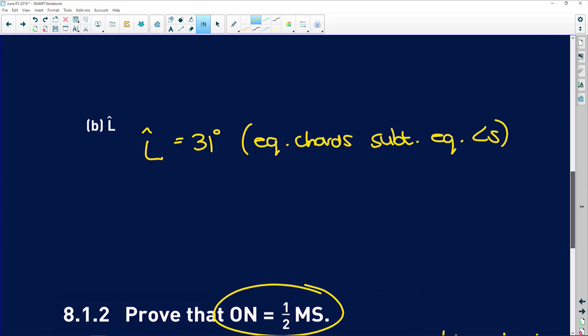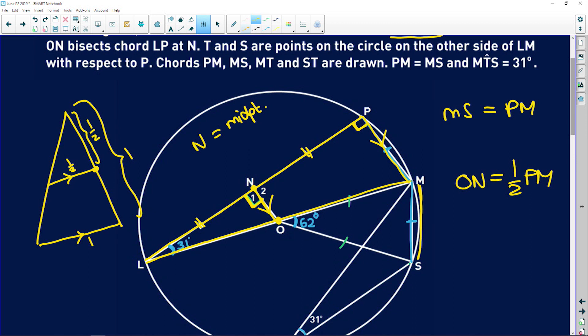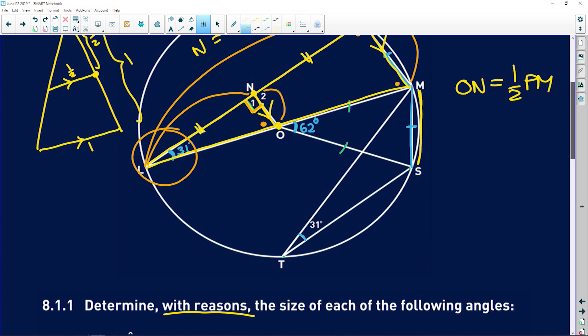Otherwise, guys, you could definitely use similarity. You could say that in this triangle, we've got 90 degrees and a 90 degrees. This angle here is included. It's common to both of those triangles. And then, therefore, this would be the remaining angle. And because this line here is half of that line there, this line here must be half of that line there. You could very easily use similarity. But I chose to use midpoint theorem.